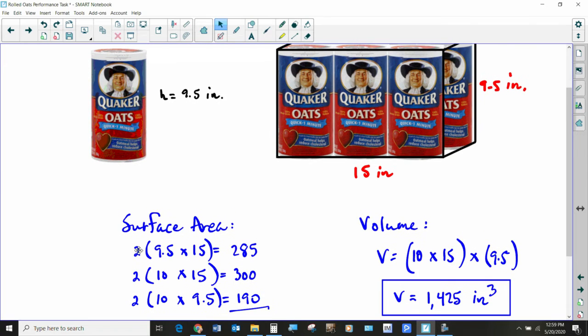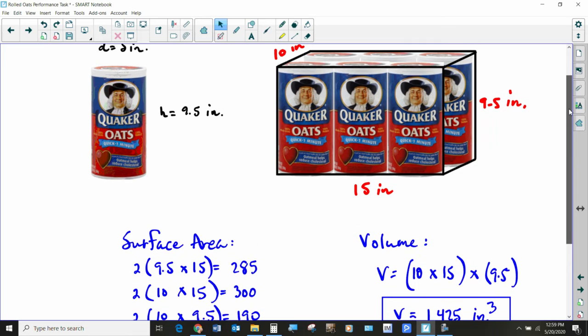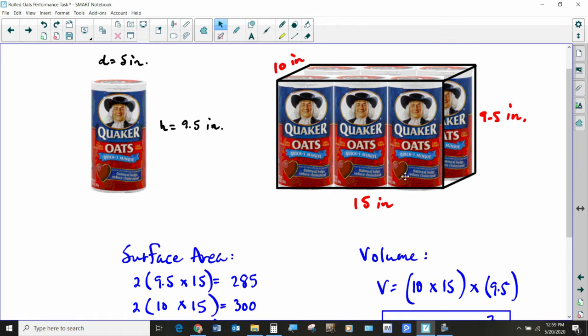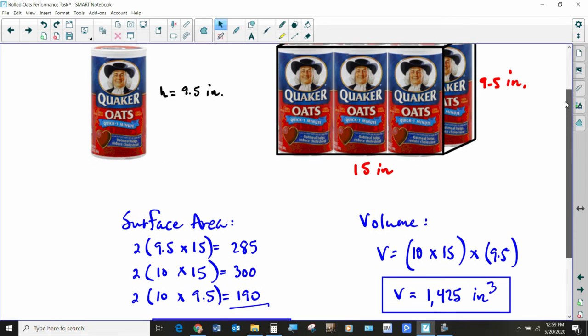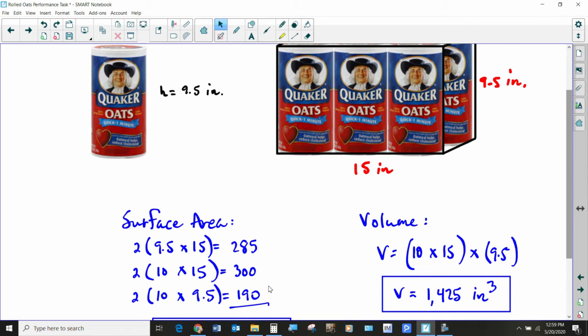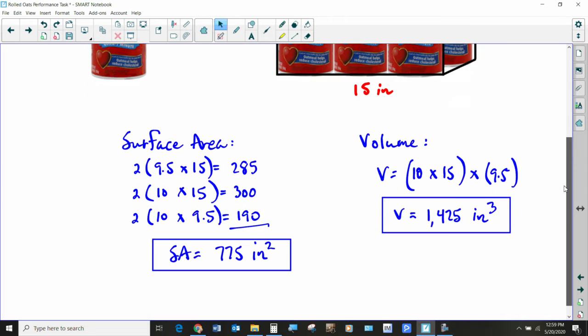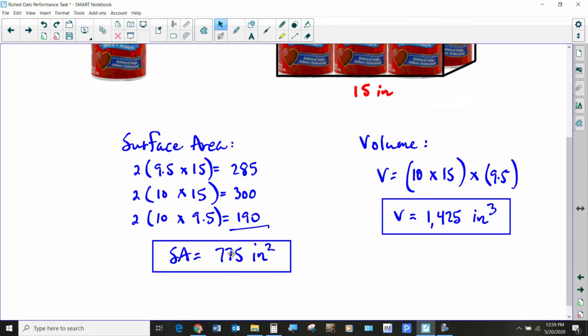We've got two faces that are 9.5 by 15. That would be the front and the back, and when you combine those, that's 285 total square inches. You've got two faces that are 10 by 15. That would be the top and the bottom, and those end up being a total of 300 square inches. And then you've got two sides, the right and the left. That would be 10 by 9.5, and that adds up to 190. So the surface area of this configuration is 775 square inches.